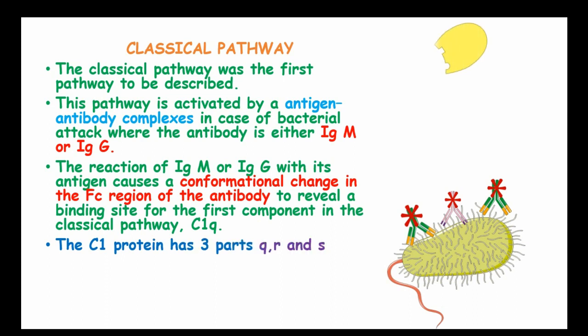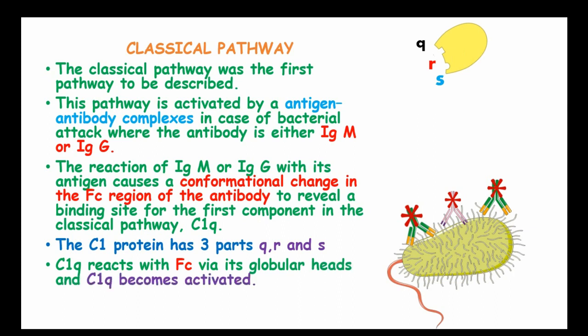The C1 protein has three parts: Q, R, and S. C1 reacts with the FC portion via its globular heads and C1Q becomes activated.